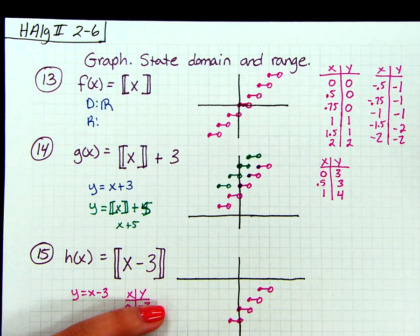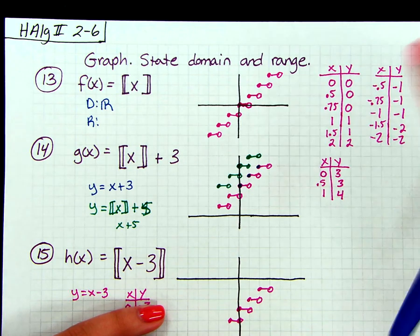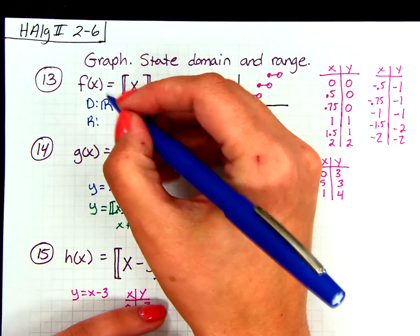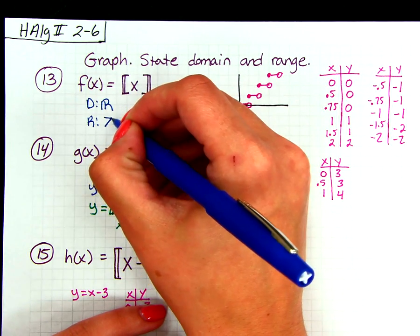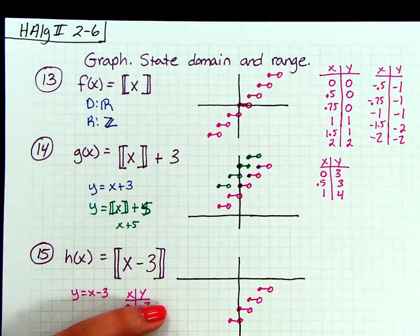So positive, negative, whole numbers, and 0. So the range for these types of graphs is going to be all the integers. So our symbol for that is our Z.